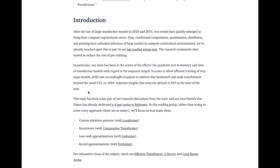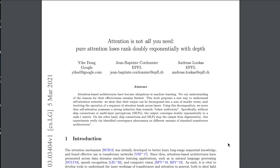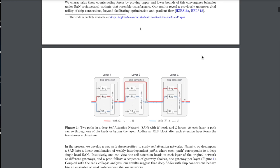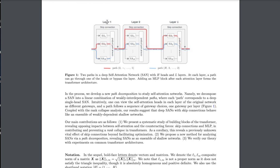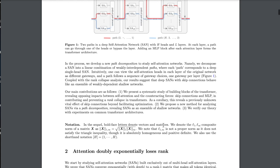Next up is a decomposition of the different components of the transformer block beyond just attention, titled 'Attention is Not All You Need: Pure Attention Loses Rank Doubly Exponentially with Depth.' The paper deconstructs how these components interact — the transformer block's skip connections and multi-layer perceptron feature passes from layer to layer. I'm excited to read this and learn more about how these inner components of the transformer block work together.